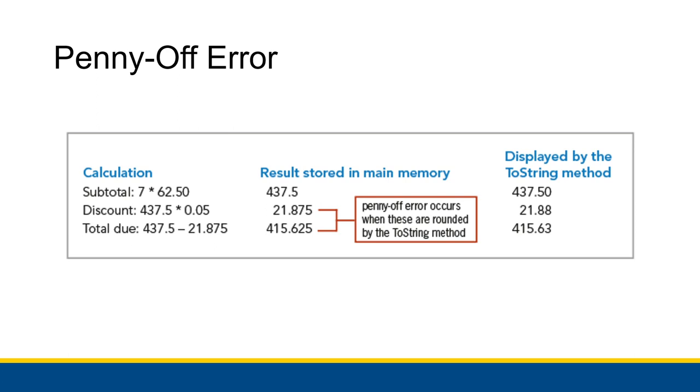So now all you would have to do in order to fix this issue right here is you could round the discount to two digits ahead of time. So Math.Round 437.5 times 0.05 comma 2, and that would give you 21.88. You set that equal to your discount variable.